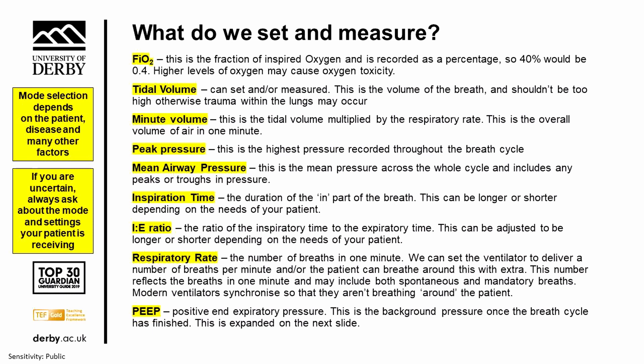We can also set the inspiration time and the I to E ratio — the inspiratory to expiratory time ratio. These can be longer or shorter depending on what we're trying to achieve. We don't just have a standard in-and-out breath; it can be shorter or longer on the inhale or exhale. Respiratory rate can be recorded if somebody is breathing spontaneously, or we can set it. Lots of these settings are changed based on blood gases — the oxygen, CO2, and pH values recorded from arterial blood — and we can make subtle adjustments to get our patient in the most optimum condition.